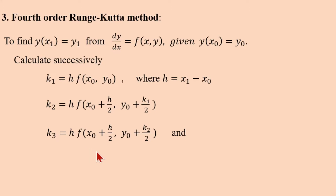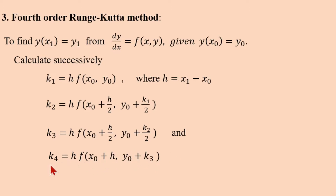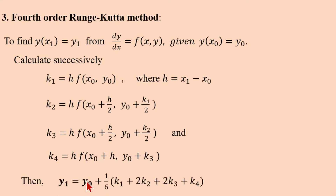Then find k4: k4 = h·f(x₀ + h, y₀ + k3). Here x₀ + h is x₁. After calculating k1, k2, k3, k4, the final formula is: y₁ = y₀ + (1/6)(k1 + 2k2 + 2k3 + k4). This is the fourth-order Runge-Kutta method to find y₁.